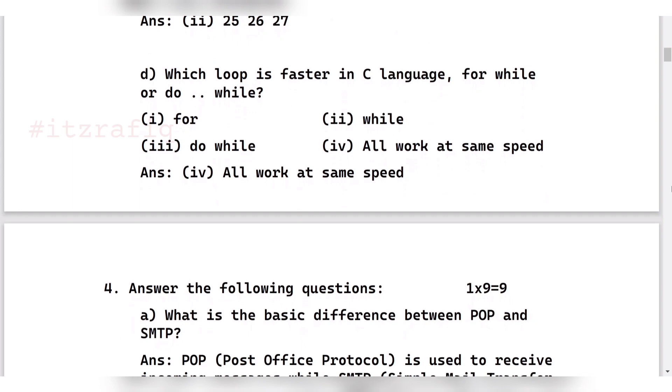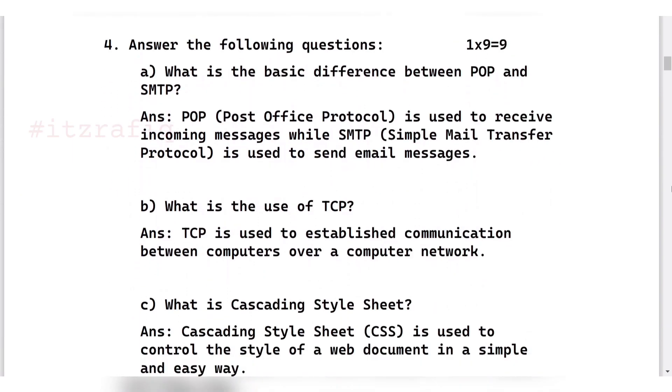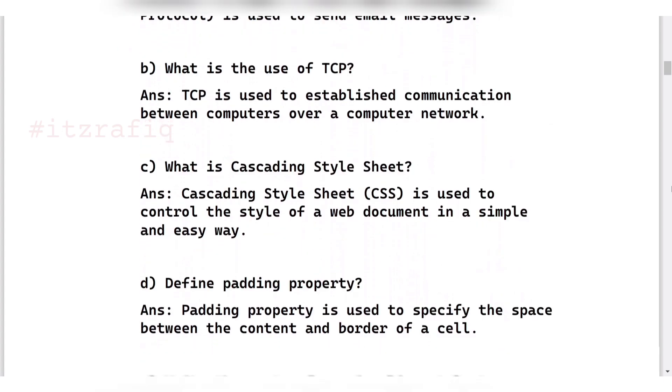Then number four, one mark questions. These questions are I think all for two marks but here given only one mark. First one is write the difference between POP and SMTP. POP is used to receive incoming messages and SMTP is used to send email messages. After that, function of TCP: it establishes communication between computers over a network.